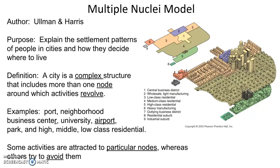Some activities are attracted to particular nodes, whereas others try to avoid them. You wouldn't see the same type of expensive restaurants around low-class residential as around high-class residential. You wouldn't see the same services around a port as around an airport, or the same services around a university as around high-class residential.